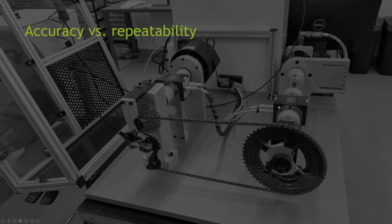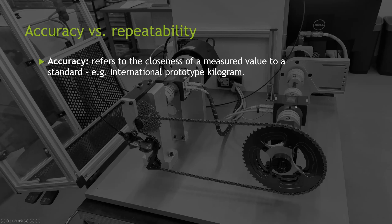The two terms that people often mistake are accuracy and repeatability. Absolute accuracy refers to the closeness of a measured value to a standard. For example, if you have a kitchen scale or a weight scale, this scale can only be accurate to some degree — let's say it's accurate up to one kilogram, meaning to the international prototype kilogram. So basically, the number when you step on the scale only reflects to some extent the accuracy. If you put the real international prototype kilogram on that scale, you would get a reading somewhere within the reported accuracy.